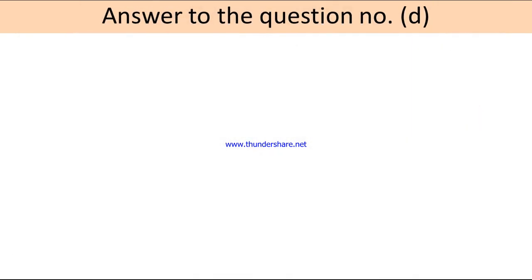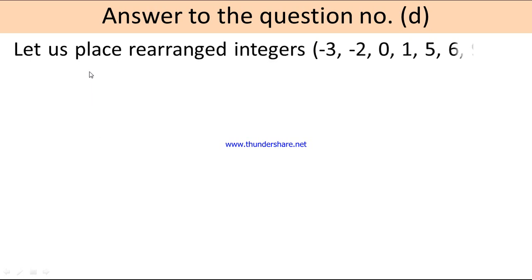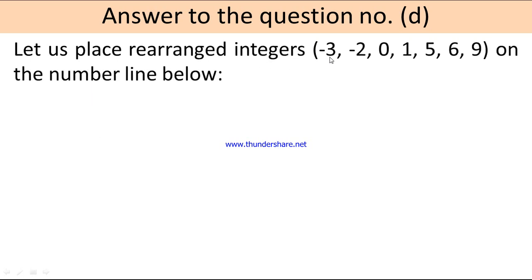Answer to question number D. Let us place the rearranged integers minus 3, minus 2, 0, 1, 5, 6, 9 on the number line to find their sum.